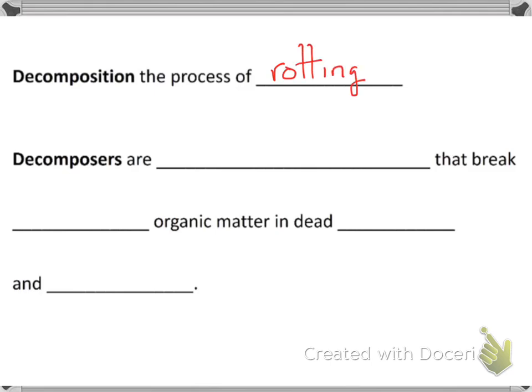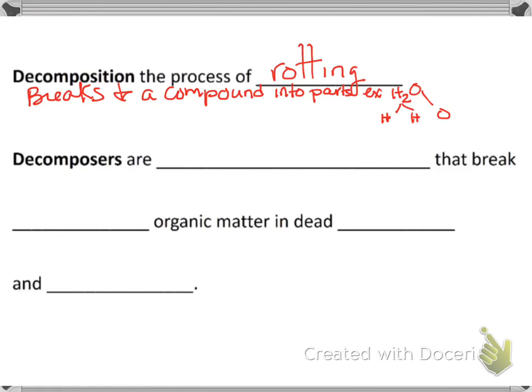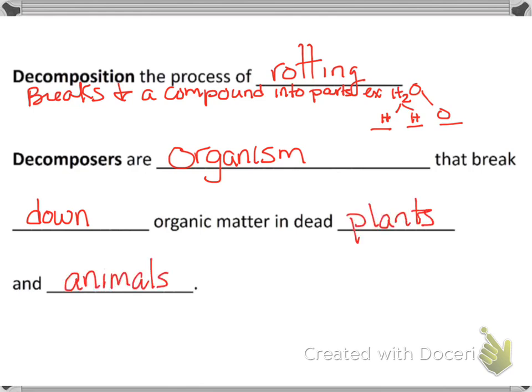Now we're going to talk about decomposition. It's the process of rotting — or more precisely, breaking down a compound. For example, a water molecule going through a decomposition reaction would break all three of those molecules apart into separate hydrogen and oxygen atoms. It doesn't just mean the physical act of rotting; it can mean breaking things down. Decomposers are the organisms that break down organic matter in plants and animals — bacteria and fungi are sometimes decomposers.